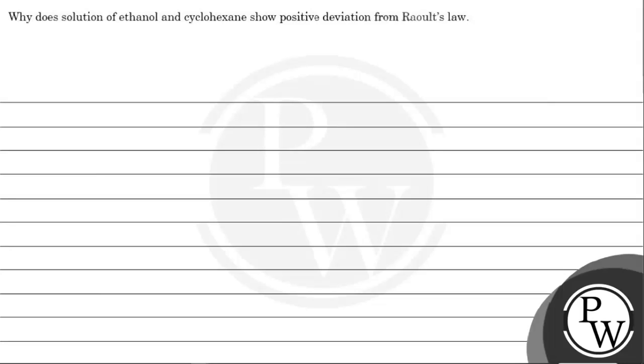Hello guys, so let's read this question. Why does solution of ethanol and cyclohexane show positive deviation from Raoult's law?